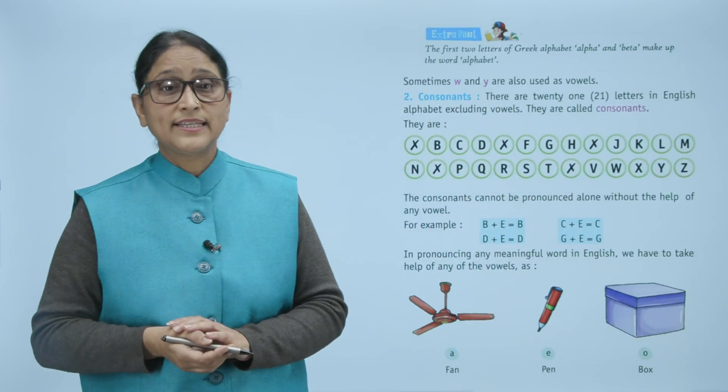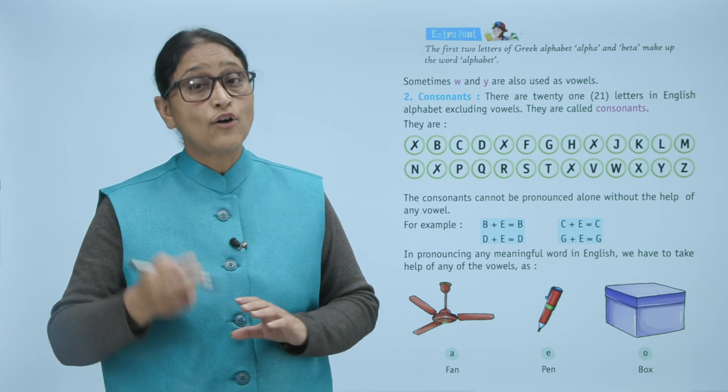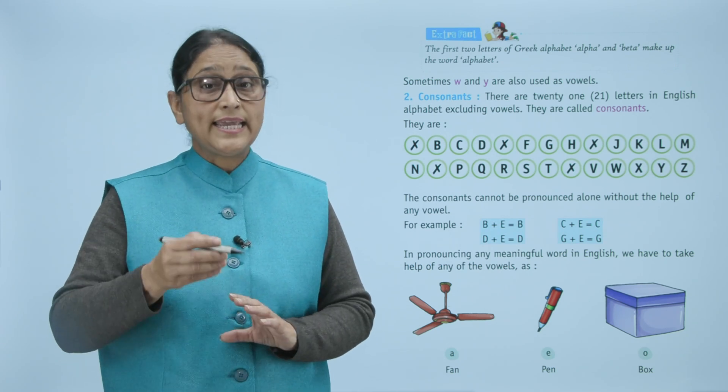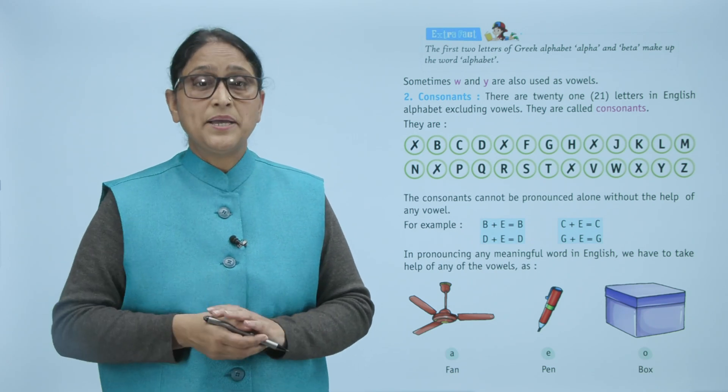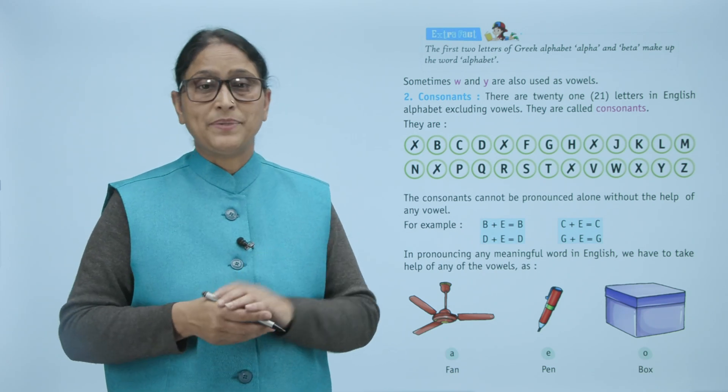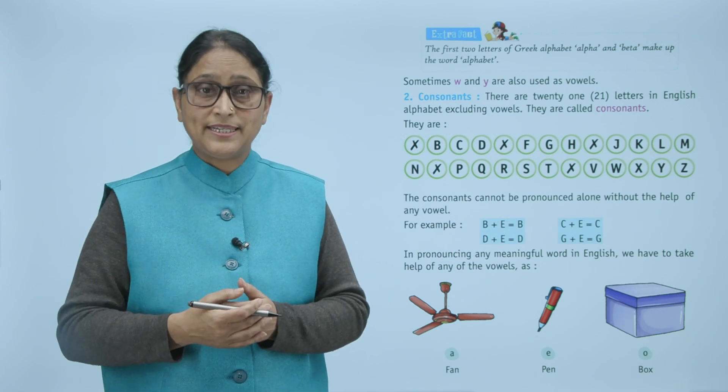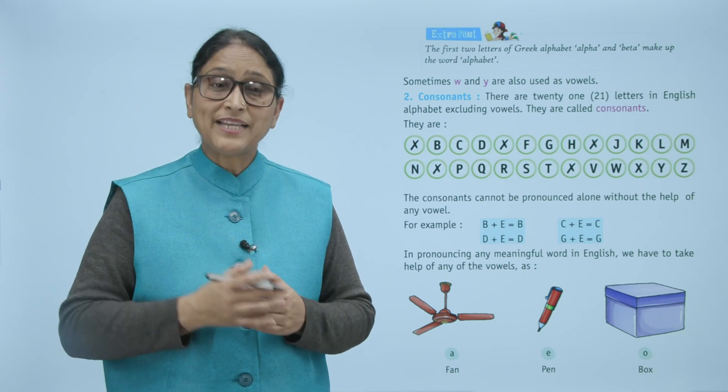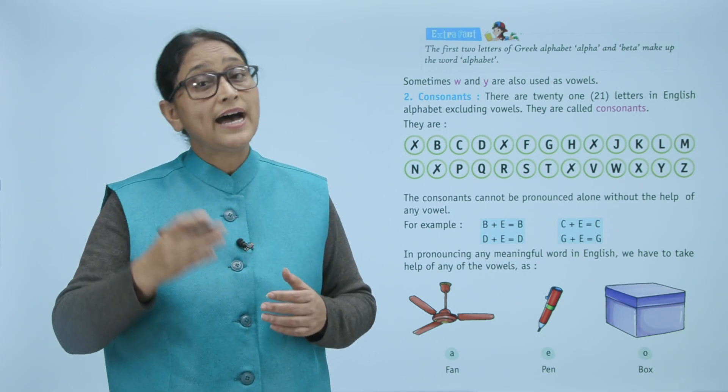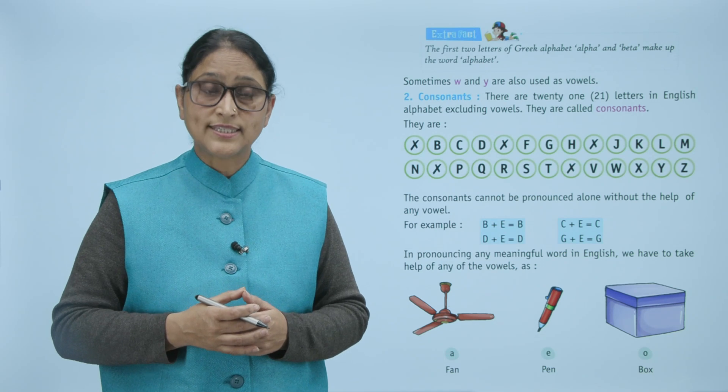Now extra facts. The first two letters of the Greek alphabet, alpha and beta, make up the word alphabet. Sometimes W and Y are also used as vowels.